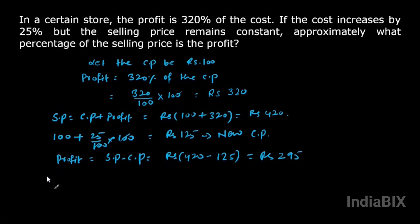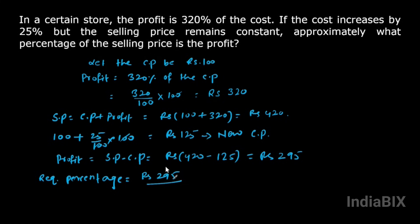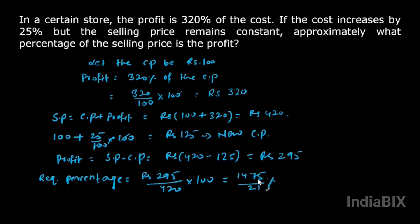So what is the required percentage? We have to find the profit as a percentage of the selling price. Profit is rupees 295 and selling price is 420, so the required percentage is 295 divided by 420 into 100, which gives 1475 by 21 percent. After dividing, the value is approximately 70%. Therefore the required percentage is 70%.